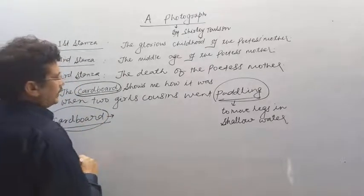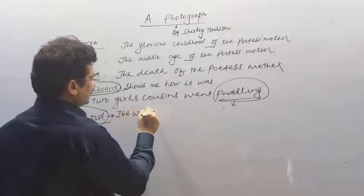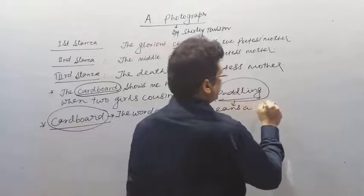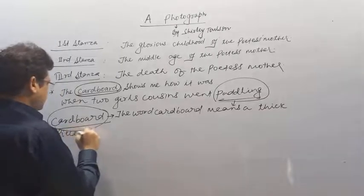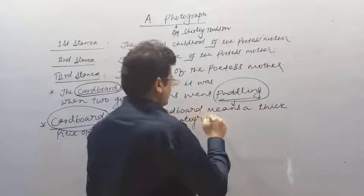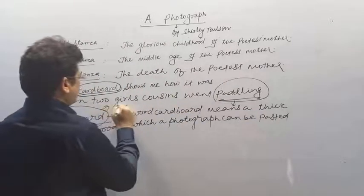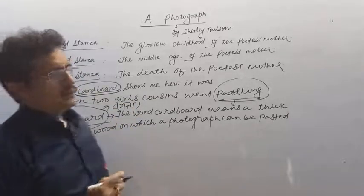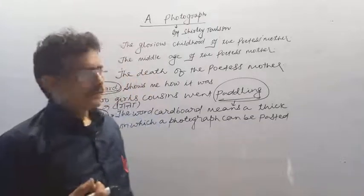The simple meaning of cardboard: the word cardboard means a thick piece of wood on which a photograph can be pasted — इसको हिंदी में गत्ता कहते हैं। Poem में यह word उस photograph के लिए आया है। So the simple meaning of cardboard is: लकड़ी का एक तख्त, जिस पर photograph को चिपकाया जाता है।